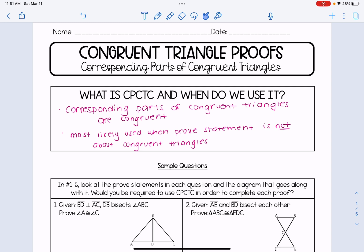When we use CPCTC in a proof, it is after the triangles have already been proven congruent. And that's important because when we are using that abbreviation, we have to have the congruent triangles in order to apply it. A quick way to recognize this is that it's most likely used when the proof statement is not about congruent triangles.